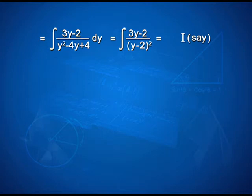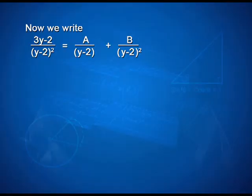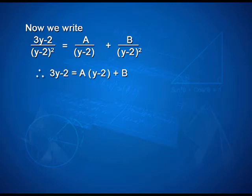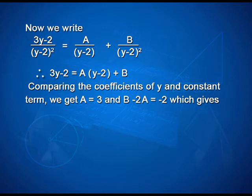That equals ∫(3y-2)/(y-2)² dy, call this I. We write (3y-2)/(y-2)² = A/(y-2) + B/(y-2)², so 3y-2 = A(y-2) + B. Comparing coefficients of y and constant term, we get A = 3 and B - 2A = -2, which gives A = 3 and B = 4.